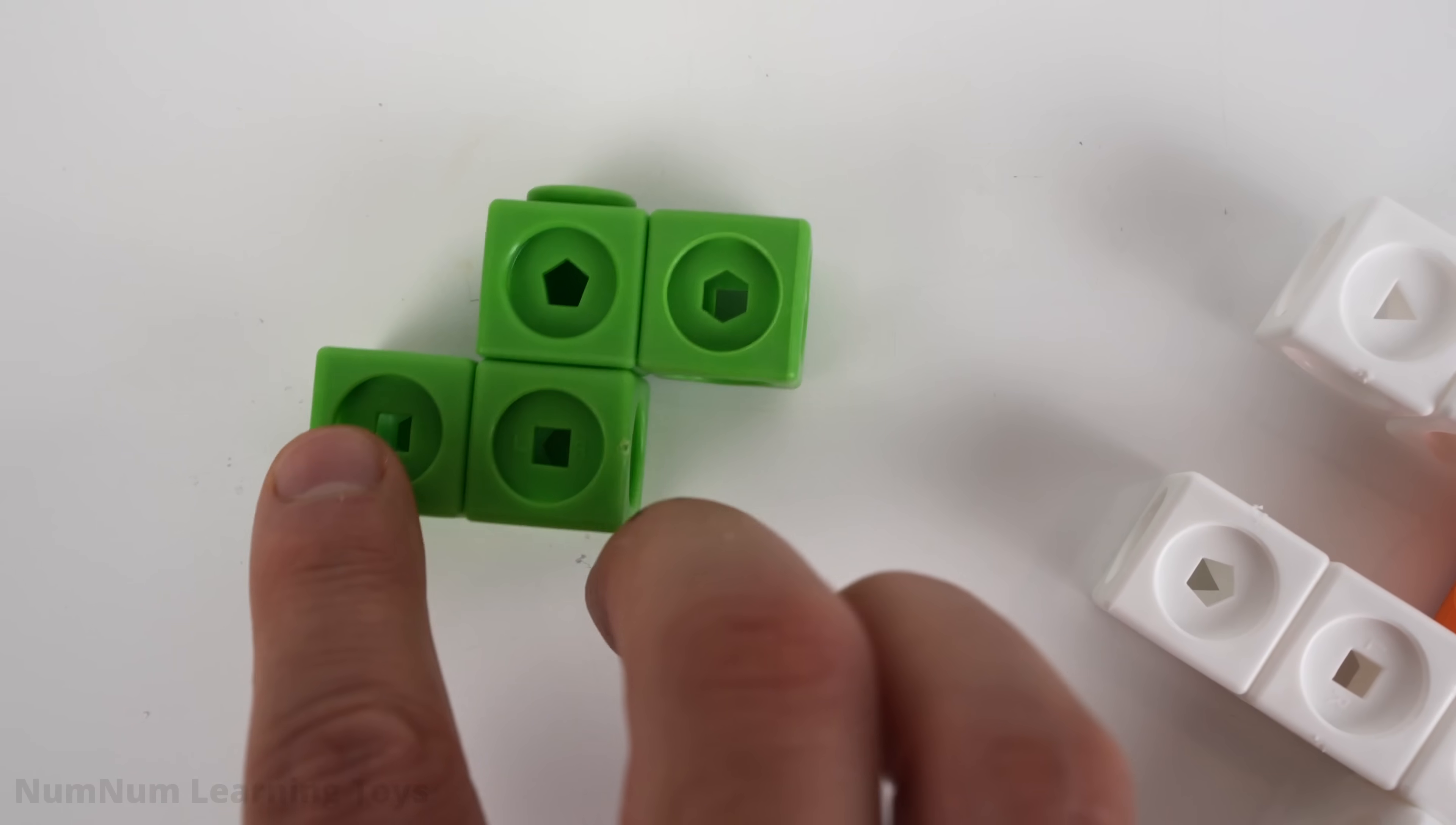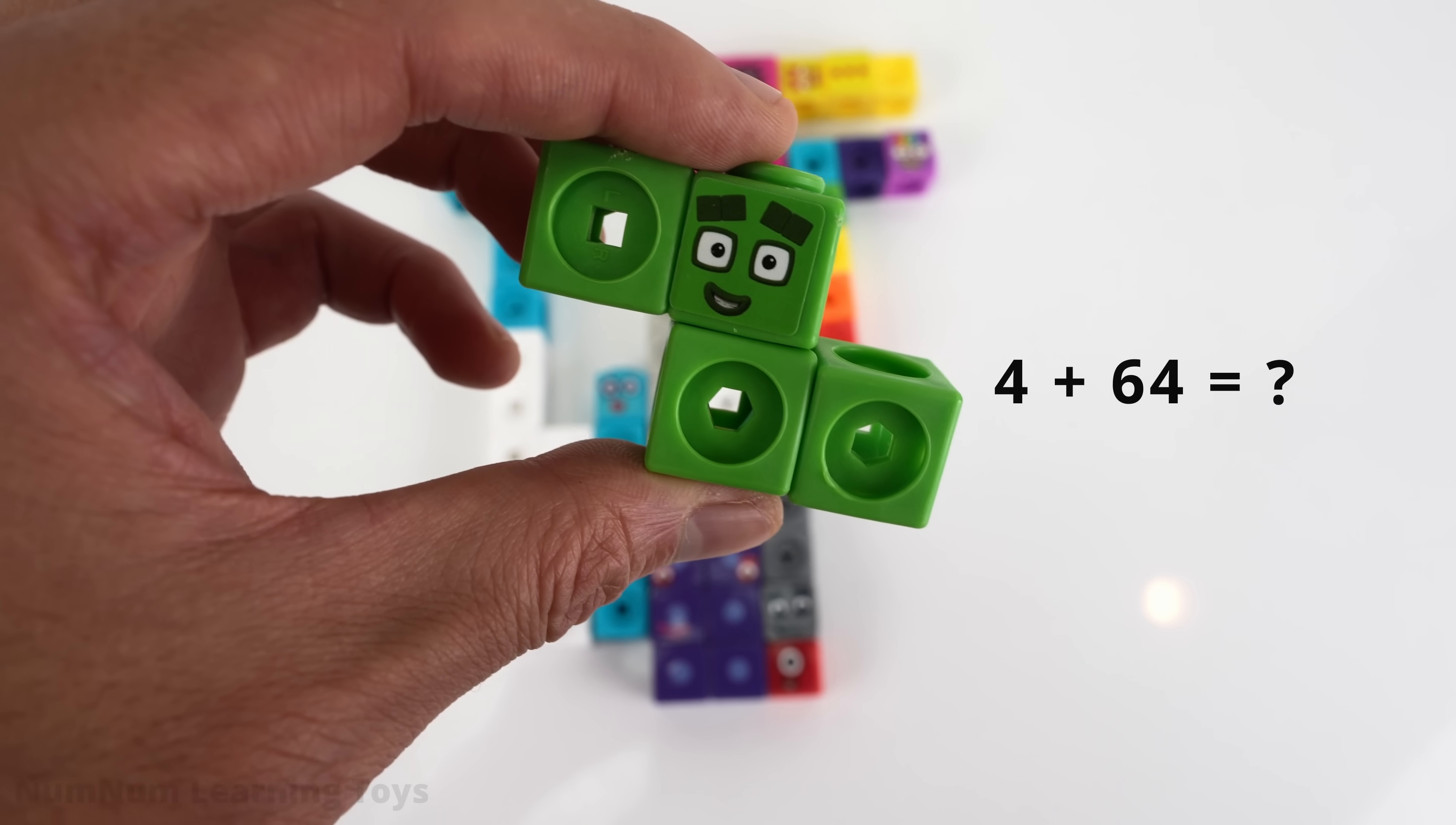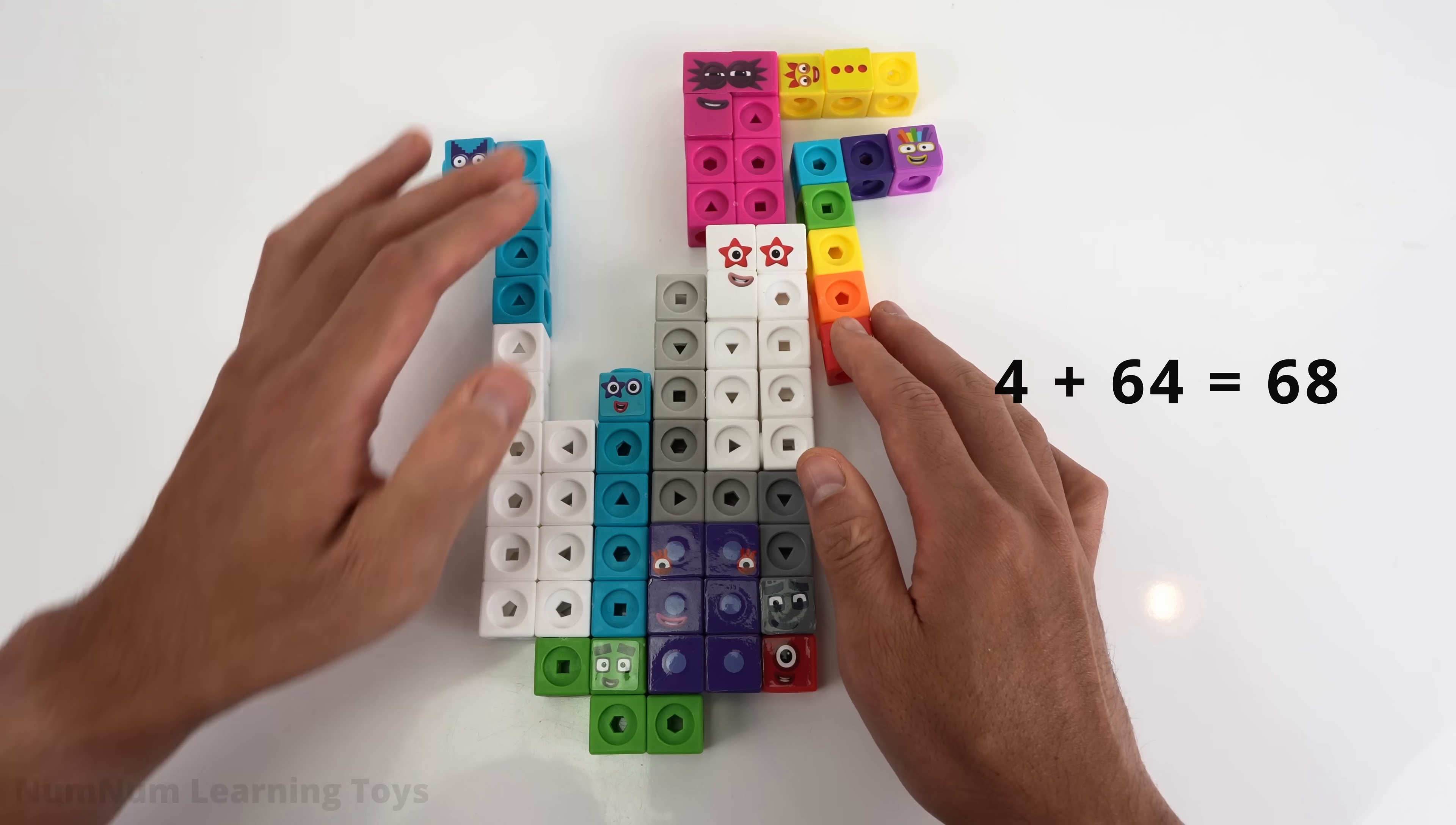Here's another zig-zag piece. But it's green! It's our friend 4! 4 more than 64 gives us what number? It's 68! We now have 68 blocks!